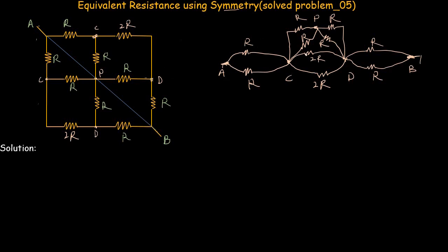Looking at this network, the two resistors between A and C are in parallel, as are the pairs between C–P and D–P, and D–B. For two parallel resistors each of value R: 1/R' = 1/R + 1/R, giving R' = R/2. So we replace each parallel pair with its equivalent resistance of R/2.